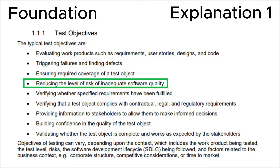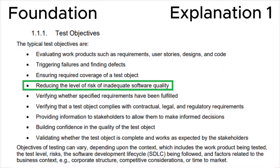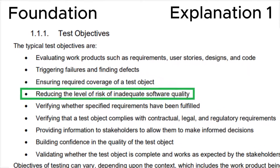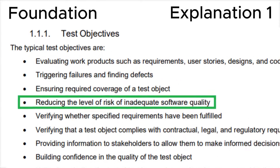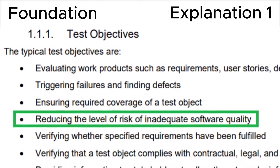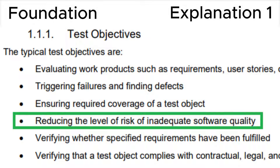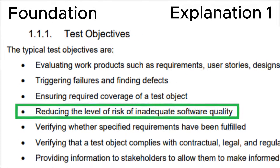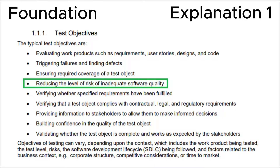Let's look at section 1.1.1 test objectives in the syllabus, where we can see that the fourth point is reducing the level of risk of inadequate software quality. This is fully consistent with the correct answer C.